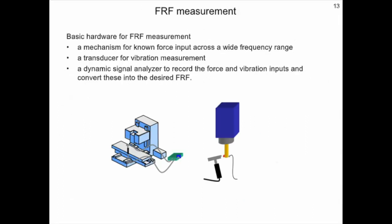Let's discuss the equipment that's necessary in order to perform a frequency response function measurement. First, we need a mechanism to input a known force across a wide frequency range. Second, we need a transducer in order to measure the vibration. And third, we require a dynamic signal analyzer that records the force and vibration inputs and converts these into the desired frequency response function.